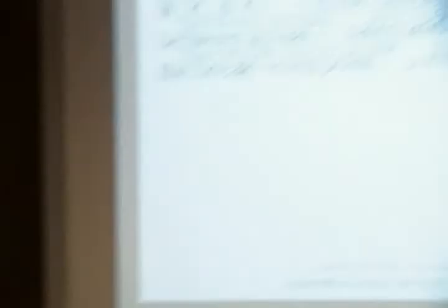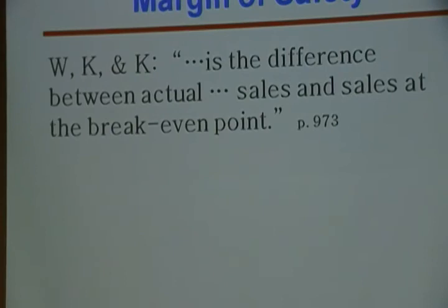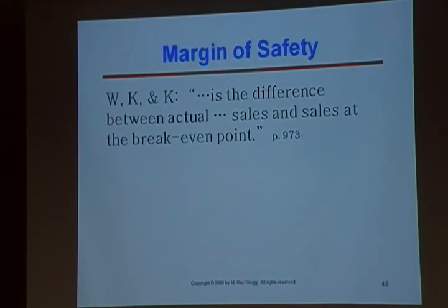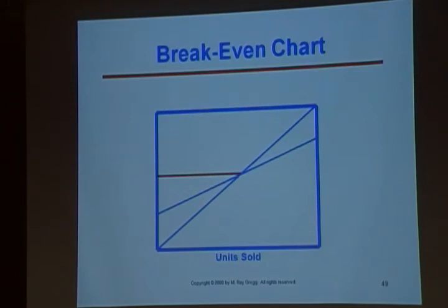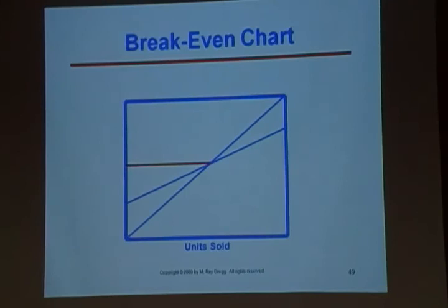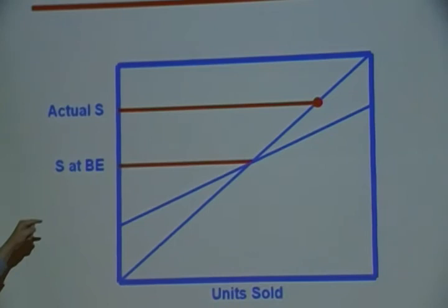Another important concept related to break-even is margin of safety. The definition in the book says it's the difference between actual sales and sales at the break-even point. Here's the break-even chart, and here's the break-even point. Let's say we're actually achieving a higher level of sales. The distance between actual sales and break-even sales — that cushion, that excess — is the margin of safety: the amount by which sales can decline before we incur a loss.